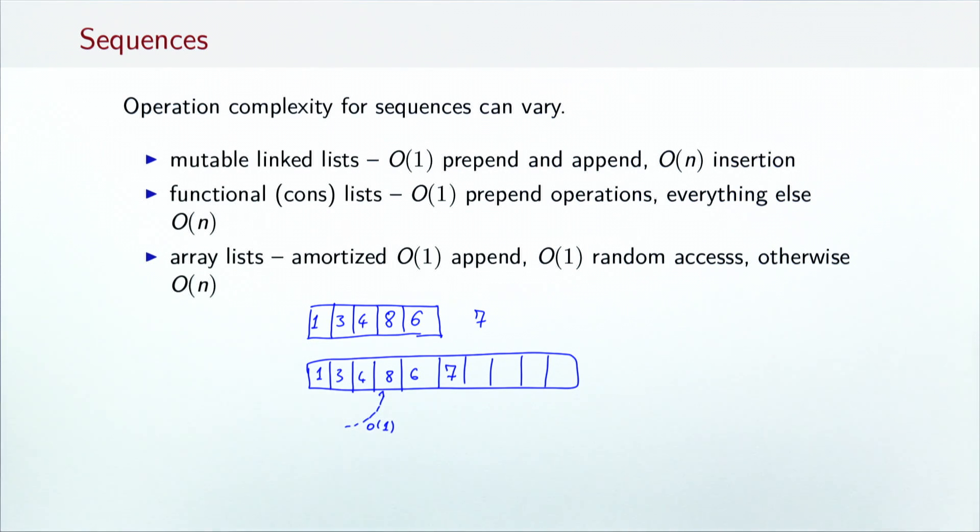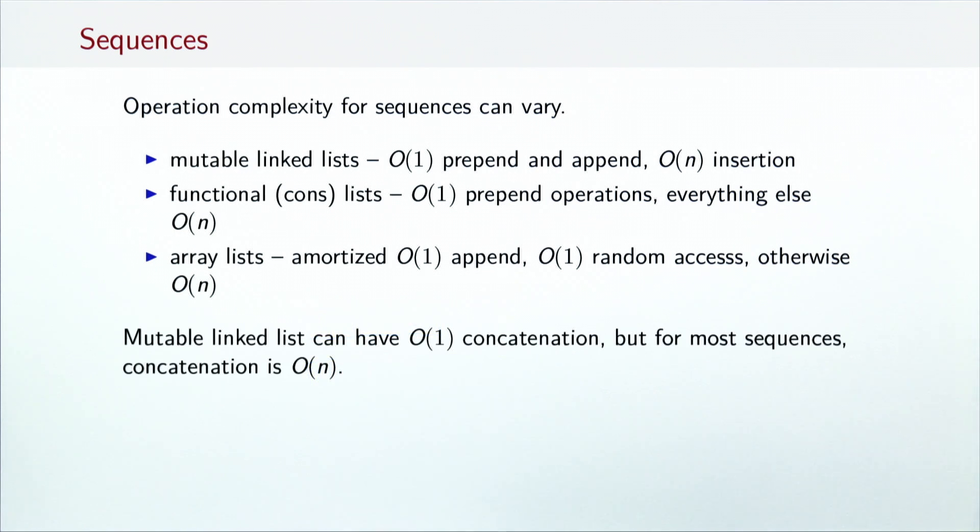Random access to elements takes constant time, but all other operations, such as prepend, take linear time. Except for mutable linked lists, concatenation for these data structures requires copying all the elements and takes a linear, O(n), amount of time.